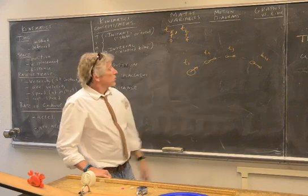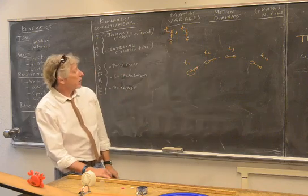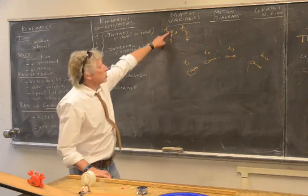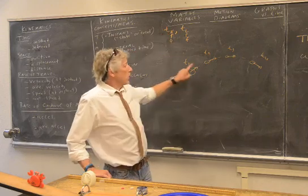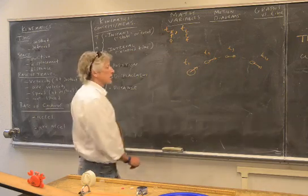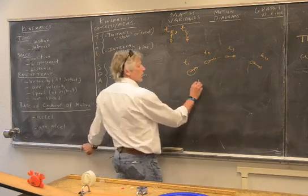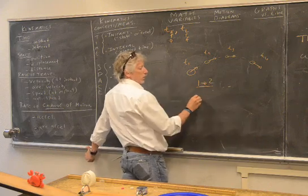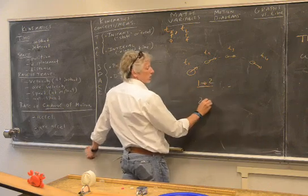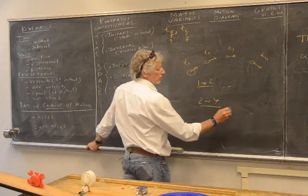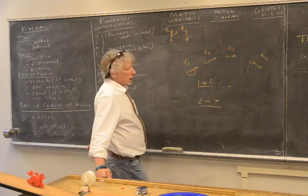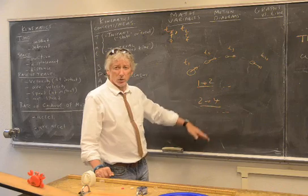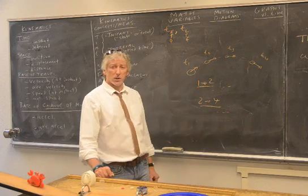In equations I generally write E and L for earlier and later. You can do as you choose, but I recommend it. Then when I do a specific equation, I'll say from one to two here's what I've got, from two to four here's what I've got, so I can clearly identify which two instants in time I'm talking about.